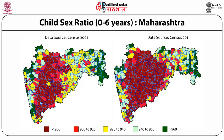Maharashtra is important because it is a state between North and South India — traditionally politically progressive, educationally and culturally more liberal. What we are seeing is that sex selection has changed tremendously even in these more liberal parts of the country.